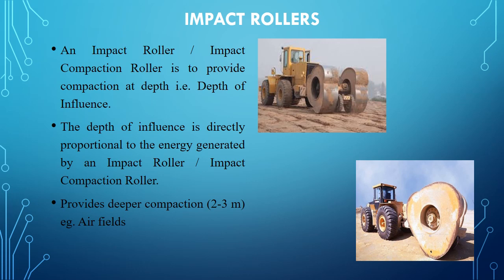Next is the impact roller. Impact means sudden loads. An impact roller, or impact compaction roller, provides compaction at a particular depth called the depth of influence. This depth of influence is directly proportional to the energy generated by the impact roller. It provides compaction up to 2 to 3 meters depth and is generally employed for airfield compaction.